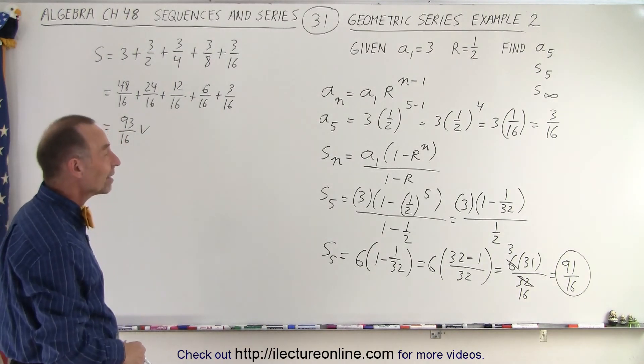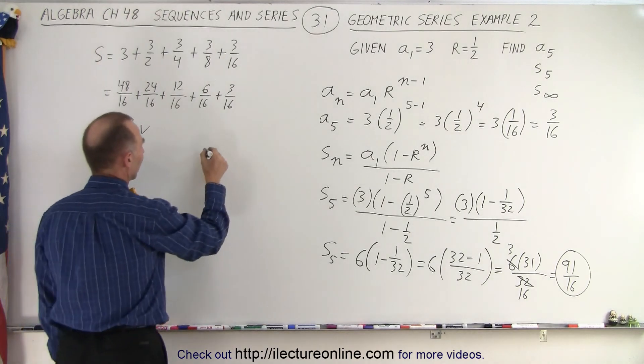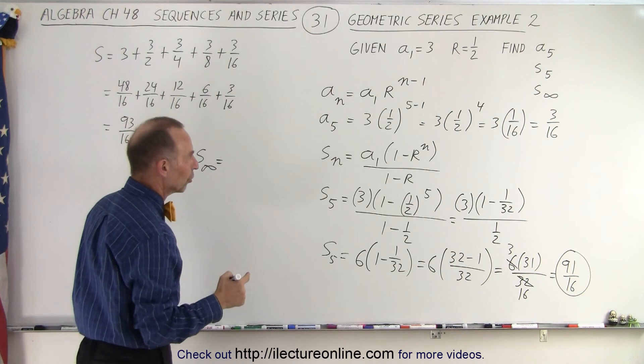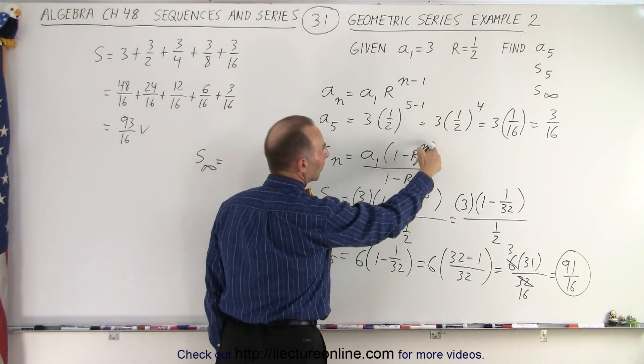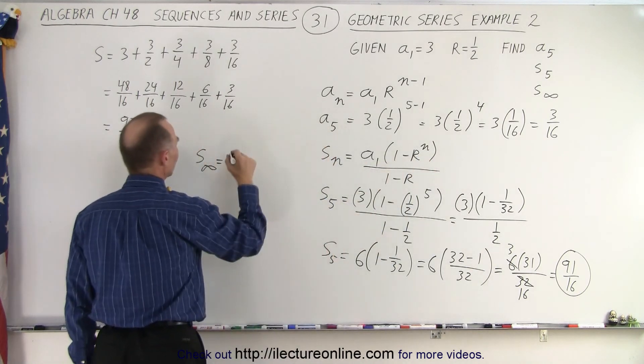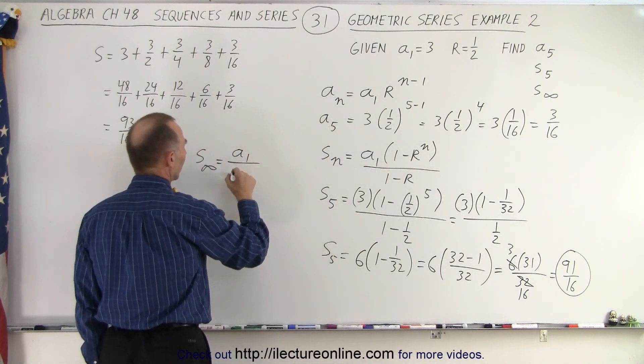Finally, we need to find the infinite sum. S infinite sum. That is equal to, the general term is remember, r to the n power. That becomes equal to 0 when r is less than 1. And n goes to infinity. So this would be a sub 1 divided by 1 minus r.